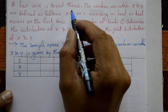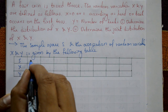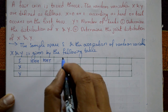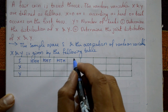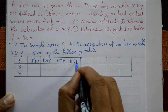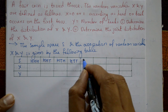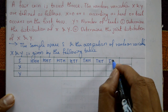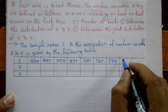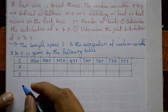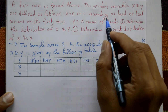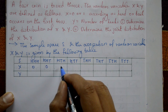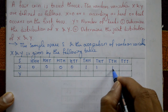Now when a coin is tossed three times, the possibilities are: Head-Head-Head, Head-Head-Tail, Head-Tail-Head, Head-Tail-Tail, Tail-Head-Head (listed as Head-Tail-Tail again corrected), Tail-Tail-Head, and Tail-Tail-Tail. Since X is 0 or 1 according as head or tail on the first toss, the X values are: 0, 0, 0, 0, 1, 1, 1, 1.